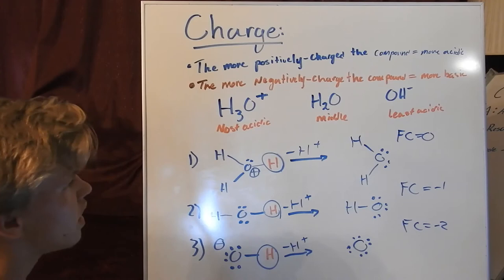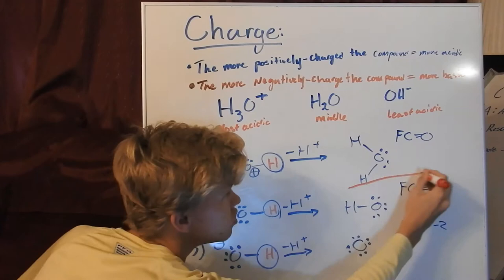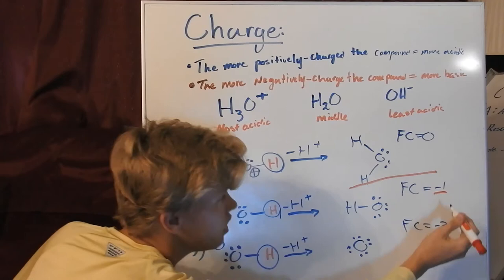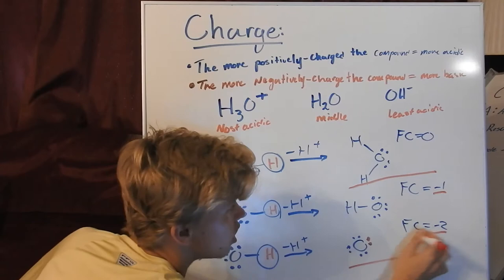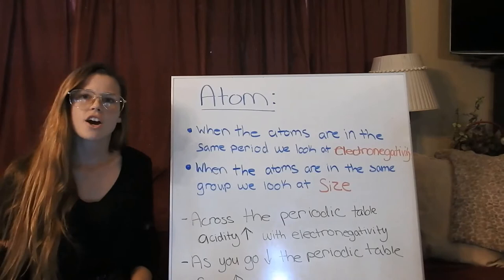Molecules are most happy when they have a formal charge of zero. So with H3O+, we'll have the most stable conjugate base. With H2O, we have a negative one charge, which is in the middle. And then finally, with OH⁻, ending up with just an oxygen with a formal charge of negative two, this is our least stable and is most likely to reform back to OH.